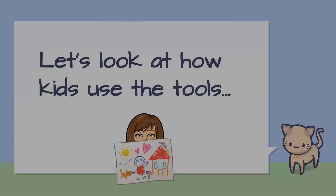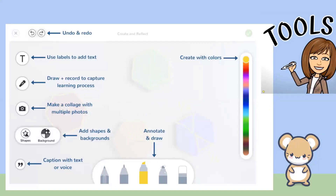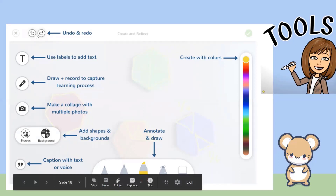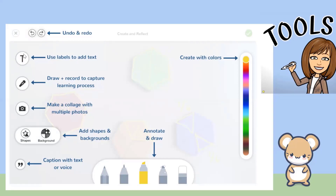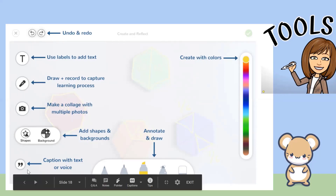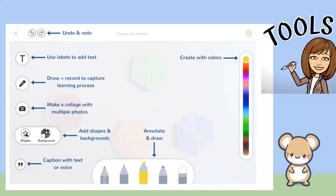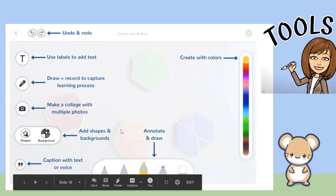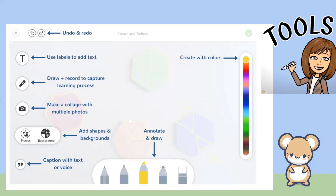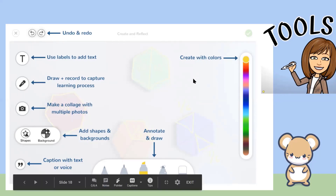Now let's look at how kids use these tools. When a template is uploaded, kids have access to tools including undo/redo, a label creator where they can change font and color, a microphone to record their thoughts for up to five minutes, a camera for photos, a fairly new option to add shapes and backgrounds, and a caption tool that can be typed or spoken. There are also annotation drawing tools: a pencil, pen, highlighter, glow pen, eraser, and color choices — you can imagine how exciting that is for kids.